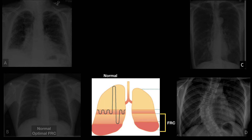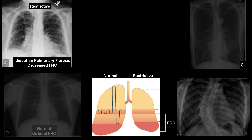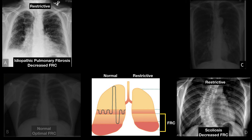There are two X-rays here that have restrictive lung disease. Here's a classic restrictive lung disease — this is an X-ray of idiopathic pulmonary fibrosis. They have decreased FRC, smaller than normal, and these patients present with hypoxemia. Another restrictive lung disease is scoliosis — they also have smaller than normal FRC, and because of this they can present with hypoxemia.